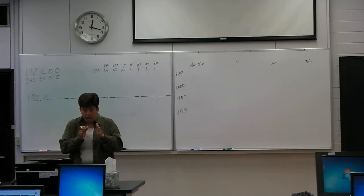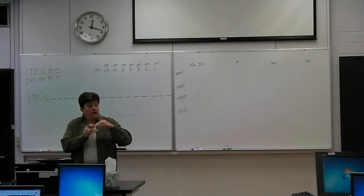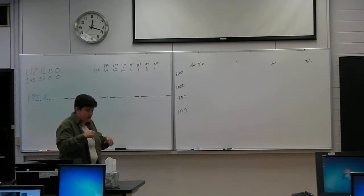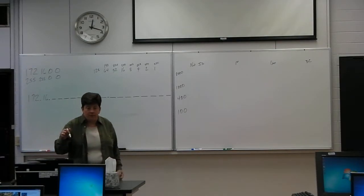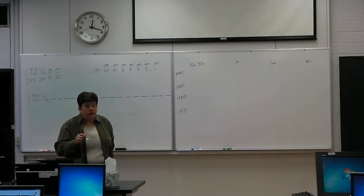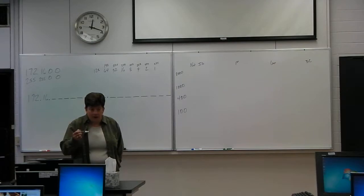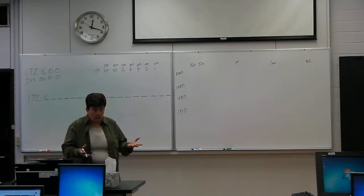It's way more common for me to get I need one network with this many and a network with this many and a network with this many. So we're going to approach that today and Variable Length Subnet Masking does that. Variable Length Subnet Mask means that I will have subnet masks of different values, varying lengths.